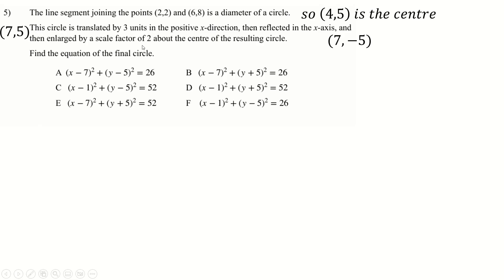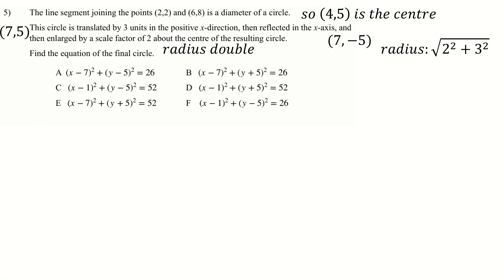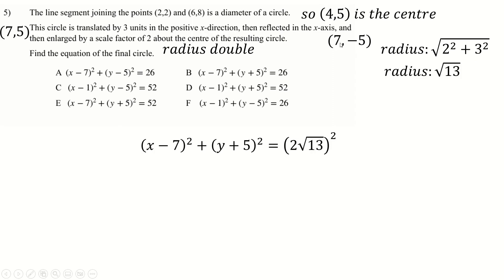Enlarging by scale factor 2 about the centre doesn't move the centre but doubles the radius. The original radius is the distance between the centre and the diameter endpoint: √(3² + 4²)... wait, that's not 5 — it's √(something). Actually 2² + 3² — it's √13. Scale factor 2 gives radius 2√13. The final circle equation is (x − 7)² + (y + 5)² = (2√13)² = 52, which is answer E.